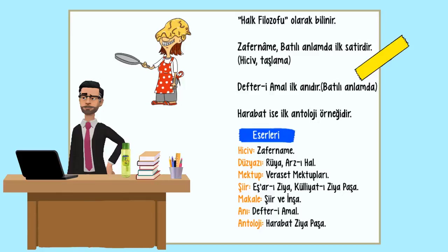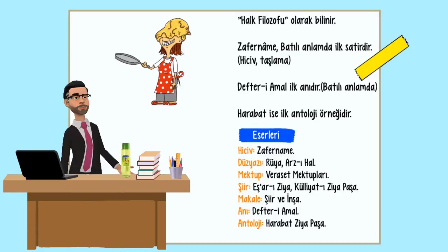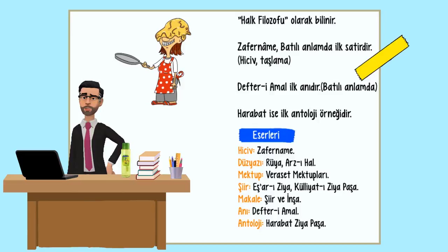Ziya Paşa'nın eserleri — Hiciv: Zafername. Düzyazı: Rüya, Arzıhal, Mektup, Veraset Mektupları. Şiir: Eşar-ı Ziya, Külliyat-ı Ziya Paşa. Makale: Şiir ve İnşa. Anı: Defter-i Amal. Antoloji: Harabat-ı Ziya Paşa.